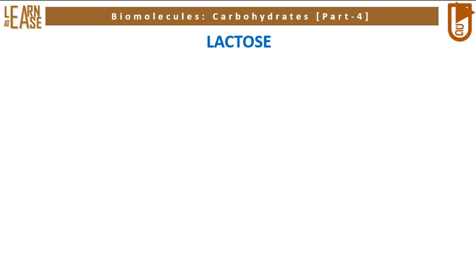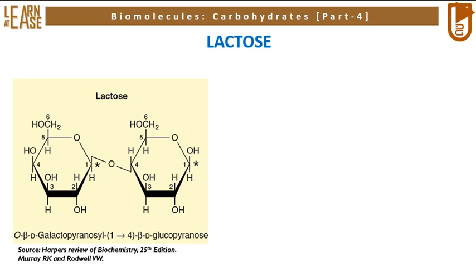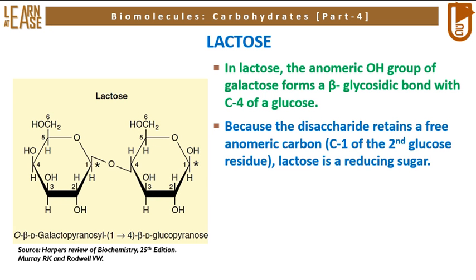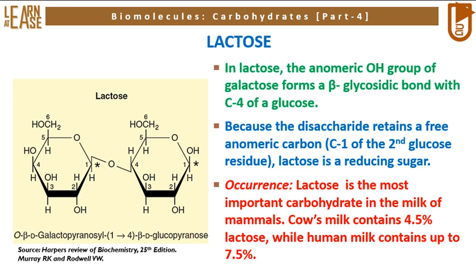Now I will explain the structure of lactose. The image on the left represents the structure of lactose. The disaccharide possesses two beta-glucopyranose residues linked by a beta-1,4 linkage. This structure is traditionally named as O-beta-D-glucopyranosyl-(1→4)-beta-D-glucopyranose. In lactose, the anomeric OH group of galactose forms a beta-glycosidic bond with C4 of a glucose. Because the disaccharide retains a free anomeric carbon (C1 of the second glucose residue), lactose is a reducing sugar. Lactose is the most important carbohydrate in the milk of mammals; cow's milk contains 4.5% lactose while human milk contains up to 7.5%.